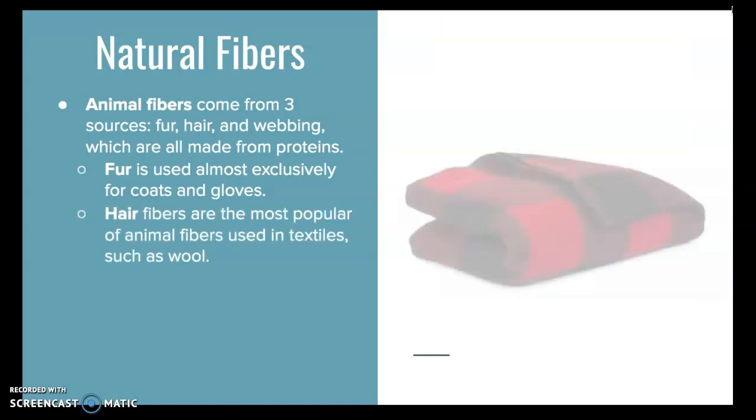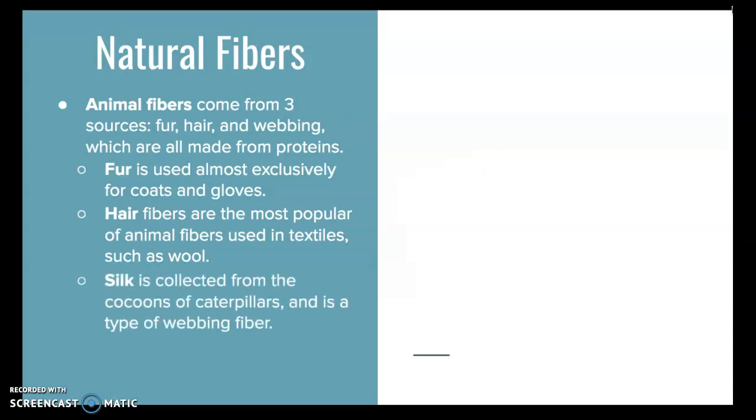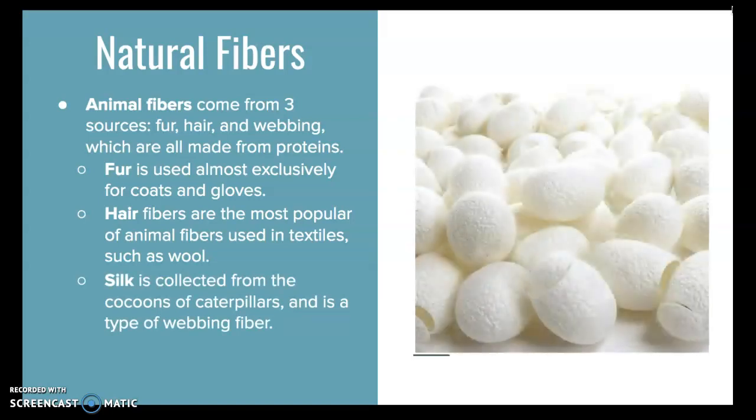Hair fibers are the most popular of animal fibers used in textiles, such as wool. Silk is collected from the cocoons of silkworms and is a type of webbing fiber. Here are silkworm cocoons.